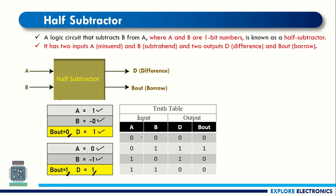Looking at the truth table: for input 0,0 the difference is 0 and borrow out is also 0. For 0,1 we are subtracting 1 from 0, so we need a borrow — borrow out is 1 and difference is 1. For 1,0 the difference is 1 and there is no borrow required. For 1,1 the borrow is 0 and the difference is also 0.